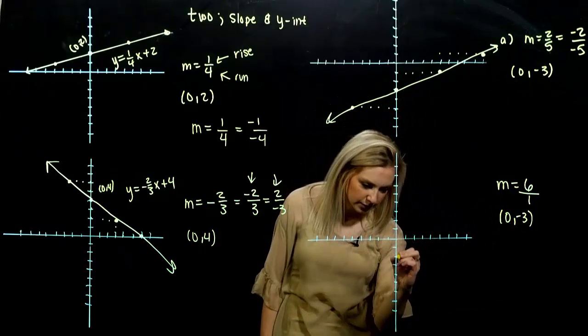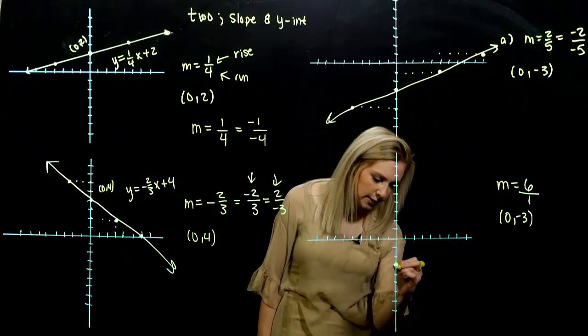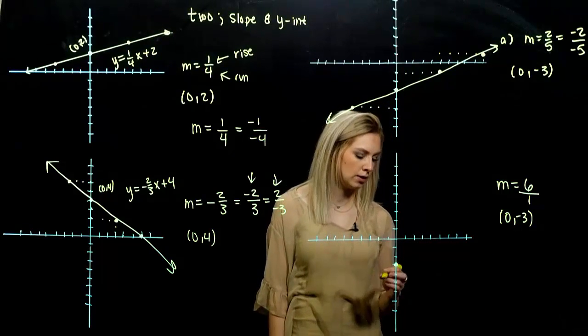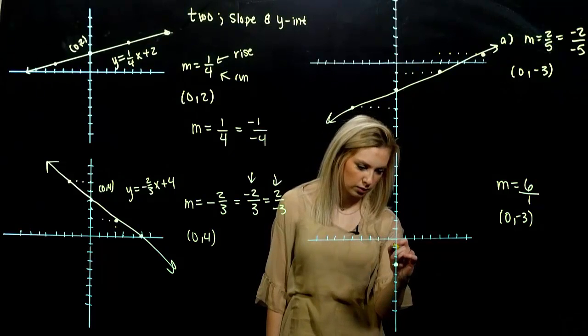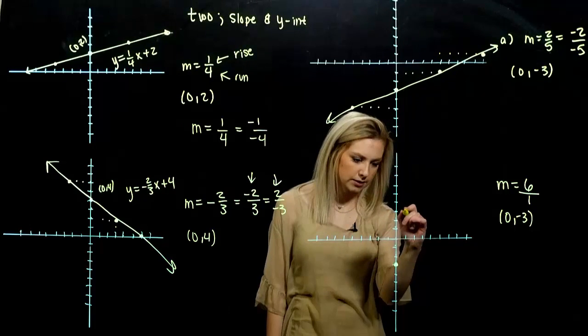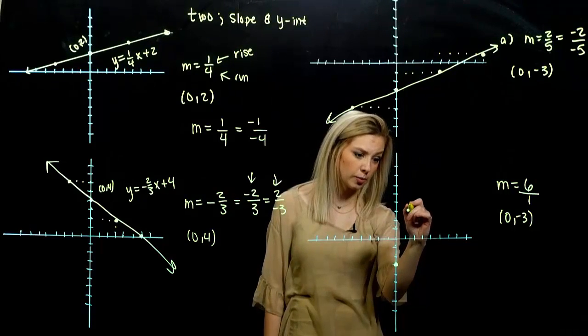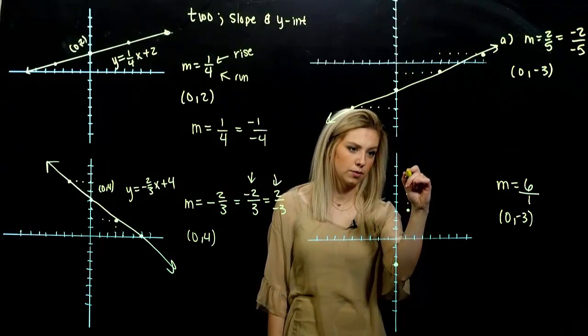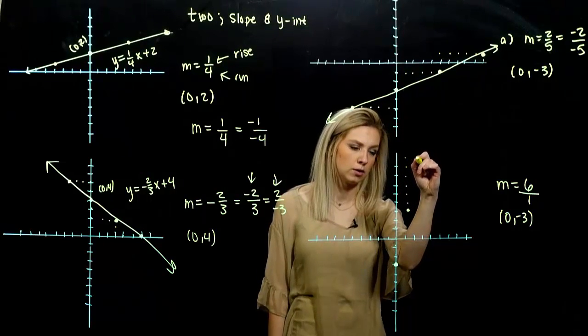We're going through the point zero three, minus three, down below. From there, I'm moving one, two, three, four, five, six, running one. Steep slope. One, two, three, four, five, six, running one.